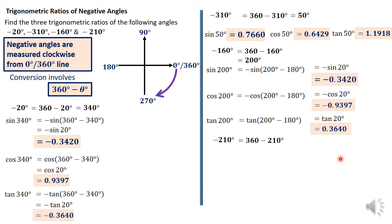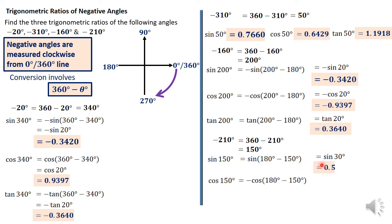For the last question, negative 210 degrees: we convert 360 minus 210 = 150 degrees. Sin(150°) is positive — it equals sin(180 − 150°) = sin(30°) = 0.5. Cos(150°) = negative cos(180 − 150°) = negative cos(30°) = −0.8660.